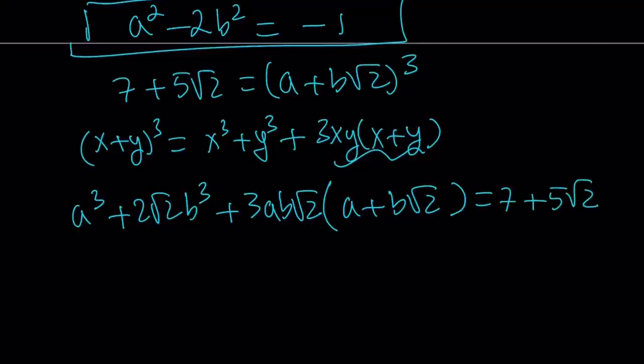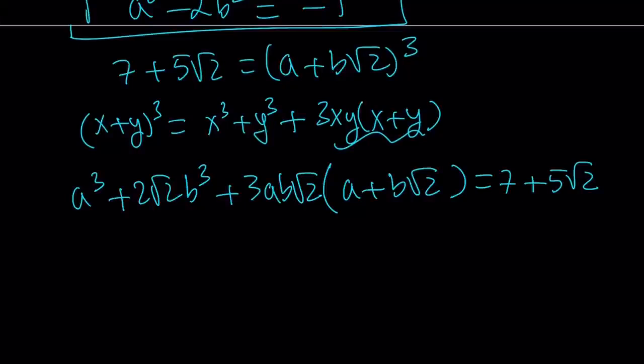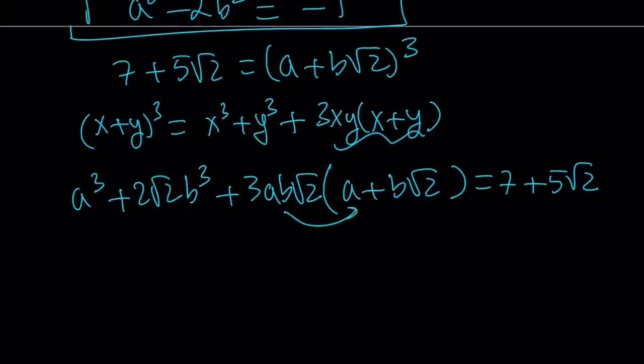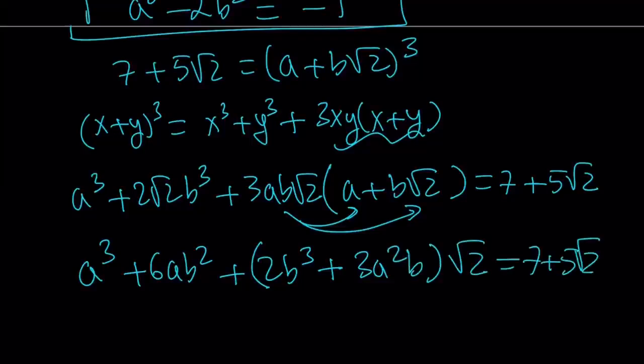Let's go ahead and organize this expression a little bit. And now we're going to solve a system of equations from here. So this gives me the following. If I distribute I get a cubed, and then the second one is going to give me 3ab squared times 2 which is 6ab squared, and then plus 2b cubed multiplied by root 2. But I'm going to factor out root 2 so I can write it this way, and then plus 3a squared b. And that is multiplied by root 2. And that's going to equal 7 plus 5 root 2.